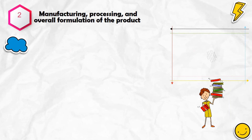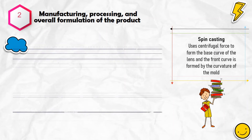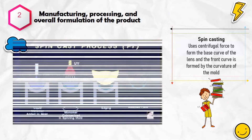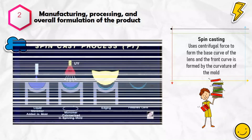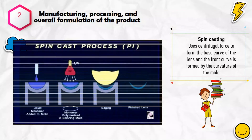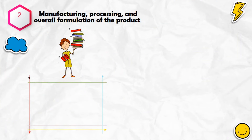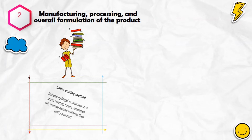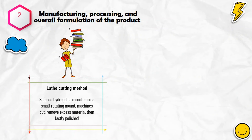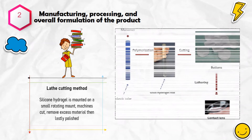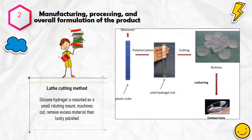A more common type of manufacturing is spin casting. It uses centrifugal force to form the base curve of the lens, and the front curve is formed by the curvature of the mold. The silicone hydrogels are then exposed to ultraviolet light to harden before being taken from the mold and hydrated in a sterile water bath. The least common method is lathe cutting, where the silicone hydrogel is mounted on a small rotating mount, machines cut and remove excess material, then the lens is polished and double-checked to ensure it is safe for consumers.